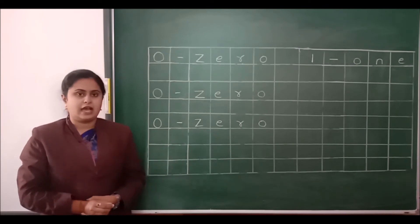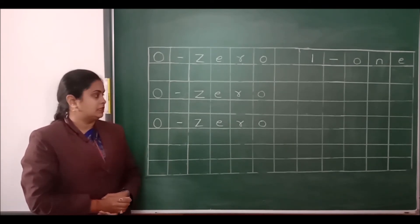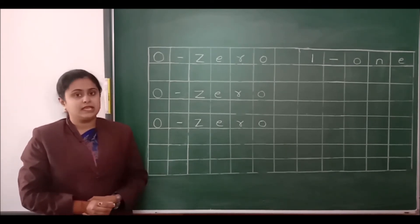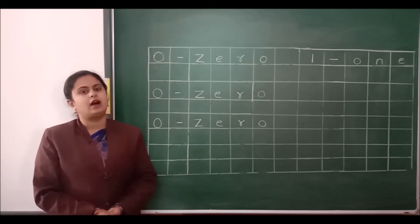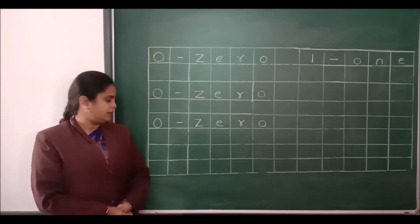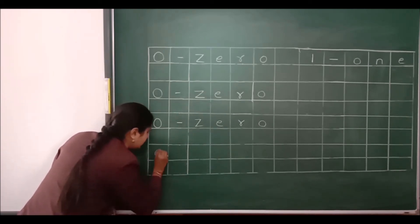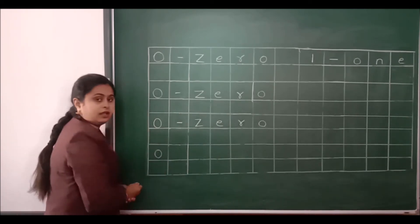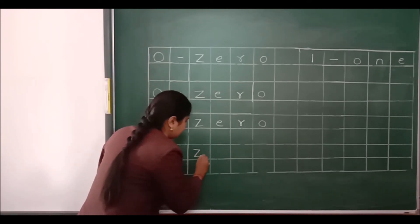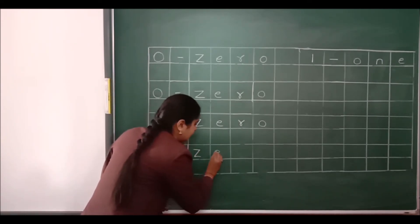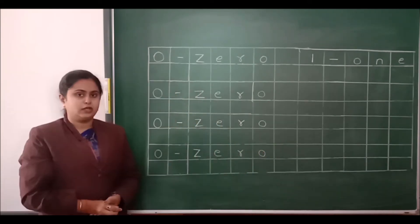Children, are you writing with me? You also write with me, so you will learn easily. Once again I will show you. See here, leave one box, then write number 0, one dash, then write Z, E, R, O — zero.